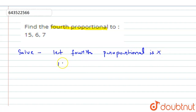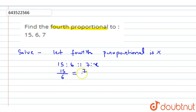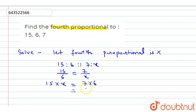We can write it as 15 ratio 6 is equal to 7 ratio x, or equivalently 15 by 6 equals 7 by x. We can also write it as 15 multiplied by x equals 7 multiplied by 6, obtained from cross multiplication.